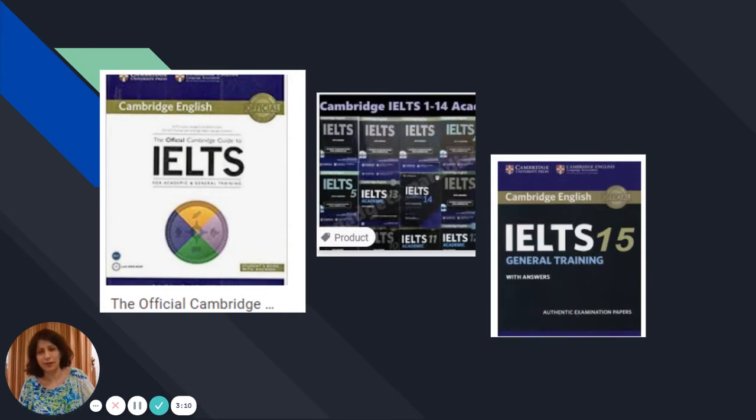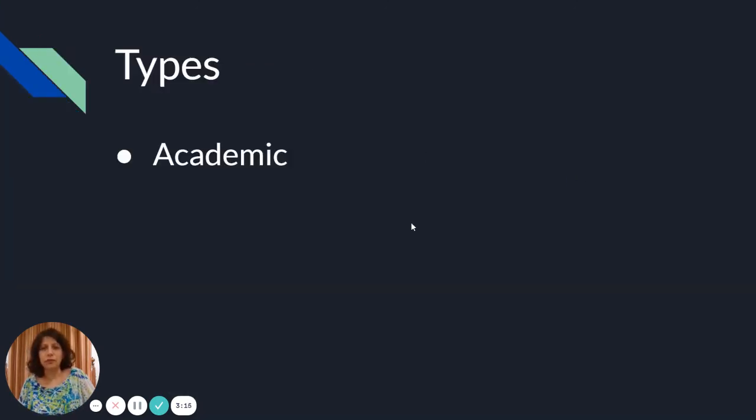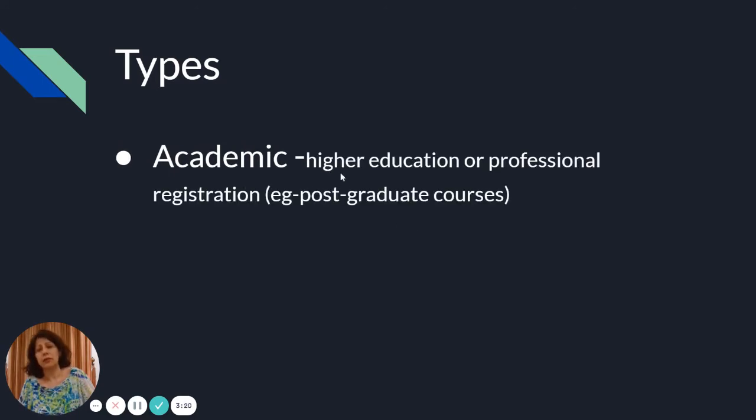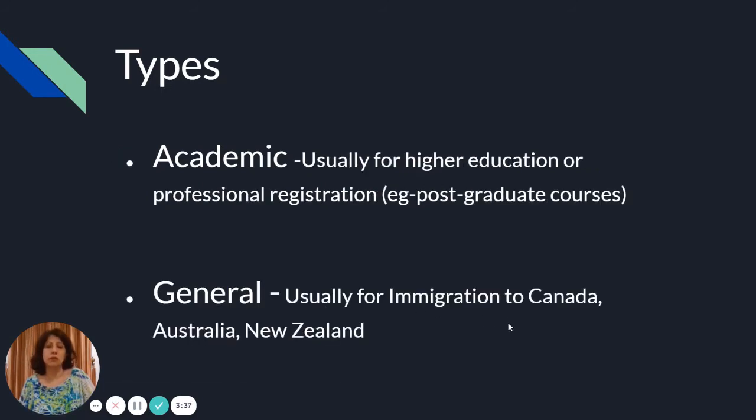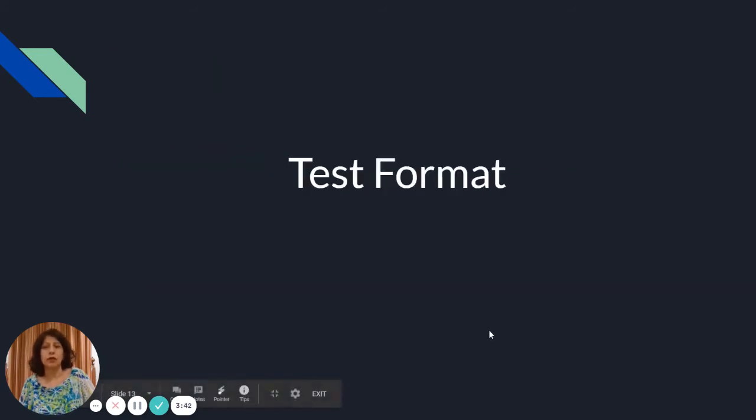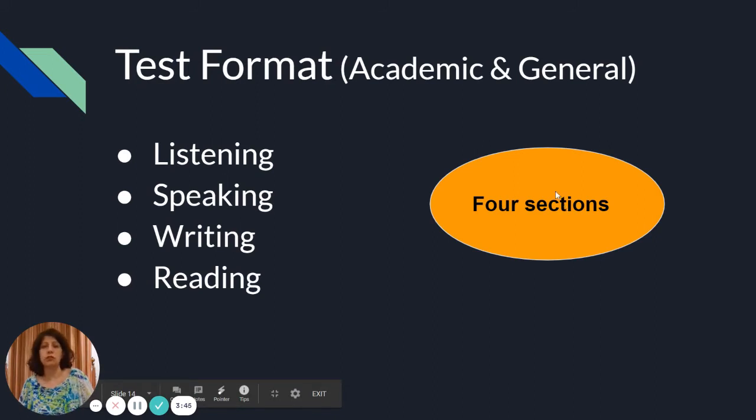Coming to the types of tests, there are two: academic and general. Academic is basically for higher education or professional registration purposes like most postgraduate courses. You have to check with universities what scores they accept - most take academic test scores. The other one is general and it's usually for immigration purposes to countries like Canada, New Zealand, and Australia.